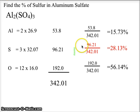I made that one red, so we understand that that's the actual answer we are looking for of sulfur percentage in the aluminum sulfate. And the oxygen 192.0 is divided by the 342.01, giving us 56.14 percent oxygen in the aluminum sulfate molecule.